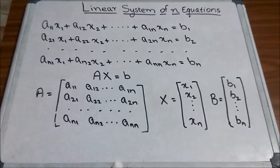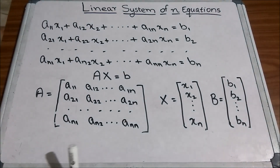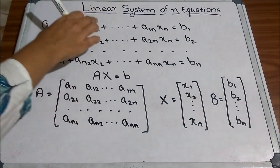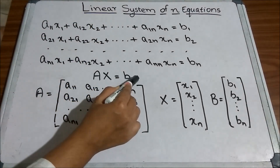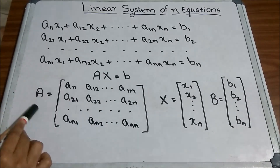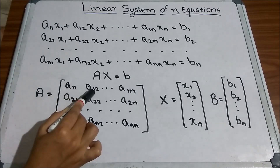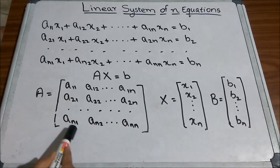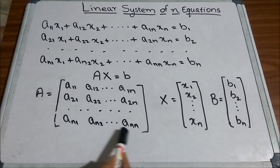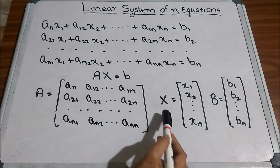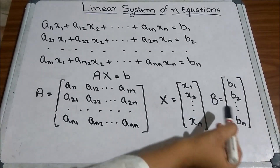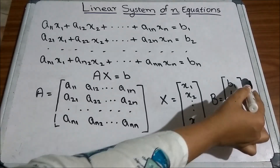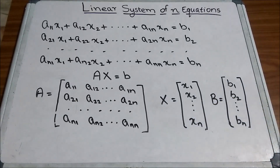This system is called homogeneous if all the bk's are 0. If all the b's are 0 it is called a homogeneous system, otherwise it is called non-homogeneous. This set of equations can be written in matrix form as Ax = b, where A is the coefficient matrix with entries a11, a12, ..., ann, x is the vector [x1, x2, ..., xn], and b is the vector [b1, b2, ..., bn].